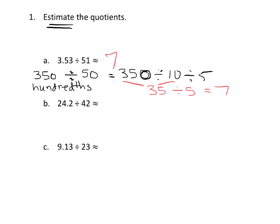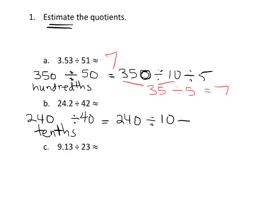Now let's do another one. We have 24.2 divided by 42. I'll probably round 42 to 40, and I'll change 24.2 to 240 tenths. So we get 240 tenths divided by 40, which I'll think of as: divide by 10, then divide by 4.